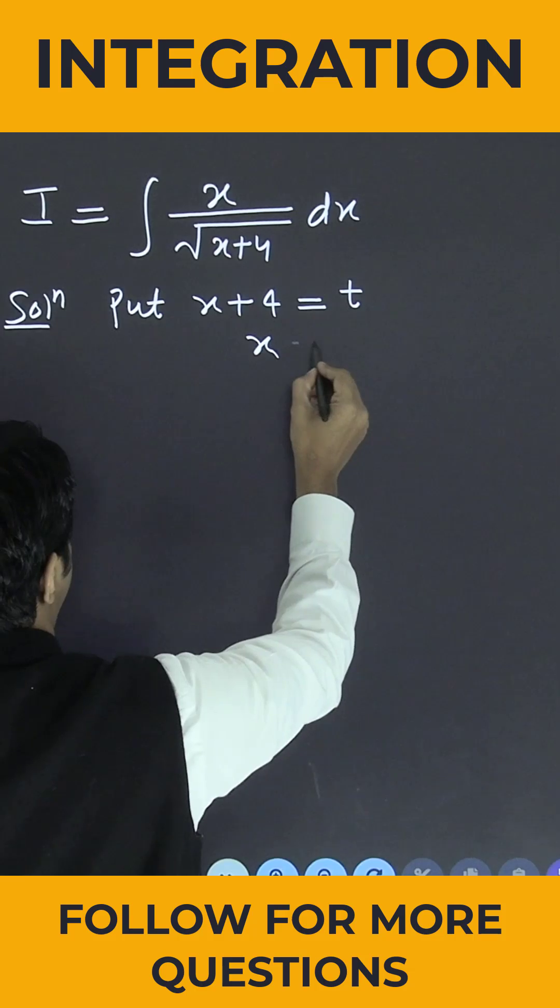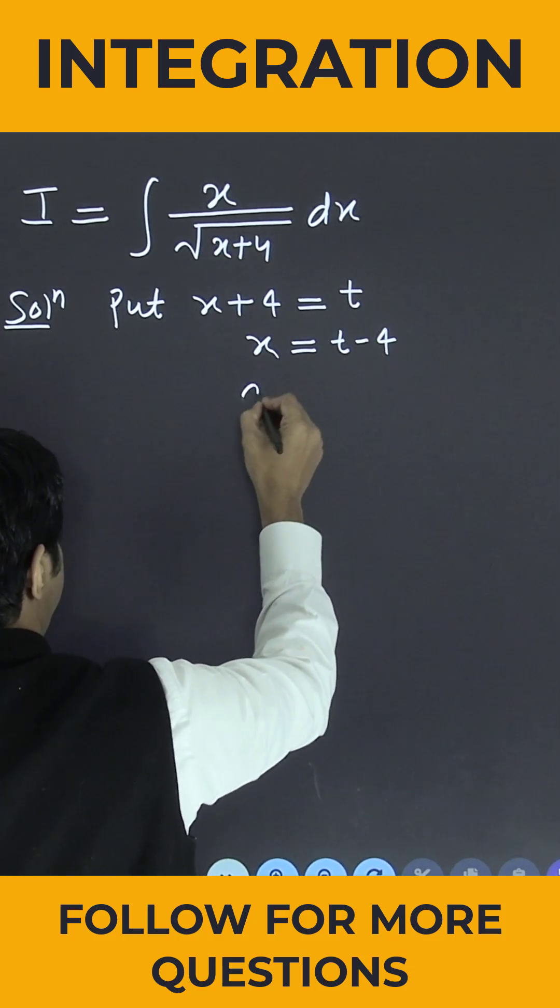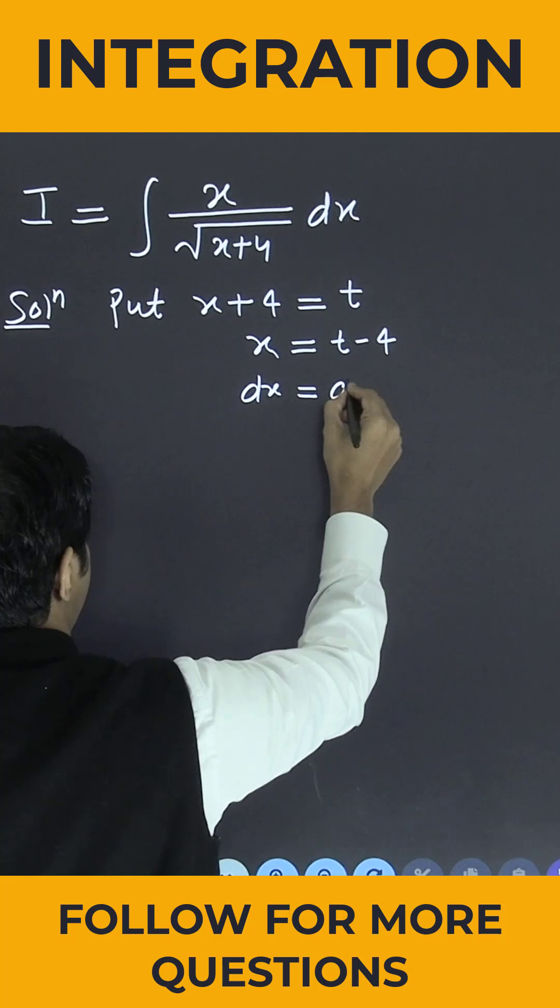What is the value of x? It is t minus 4. If I differentiate, dx equals dt.